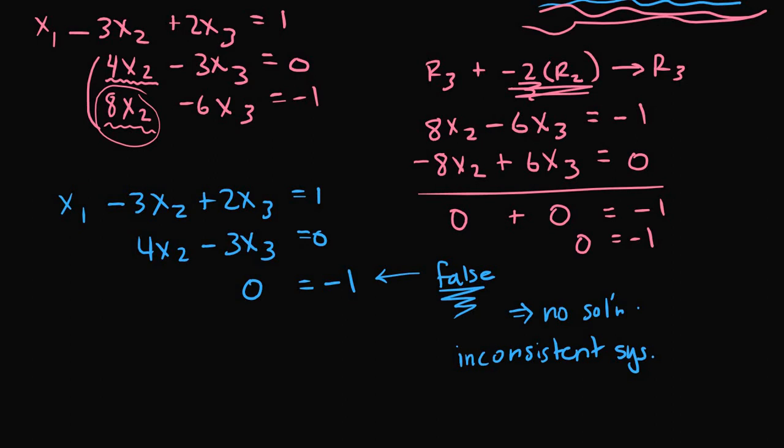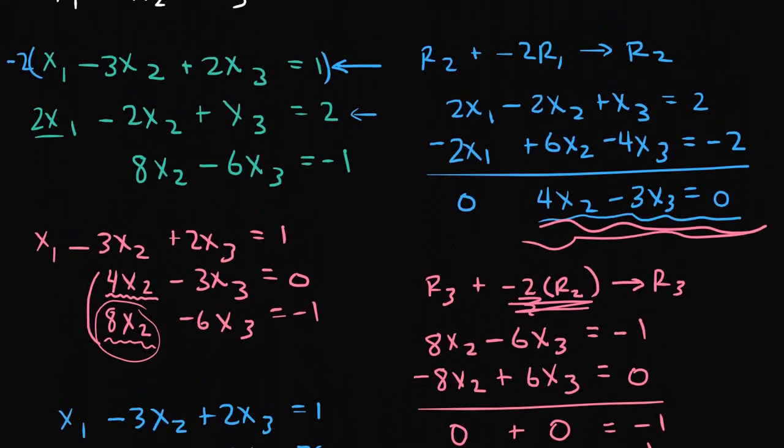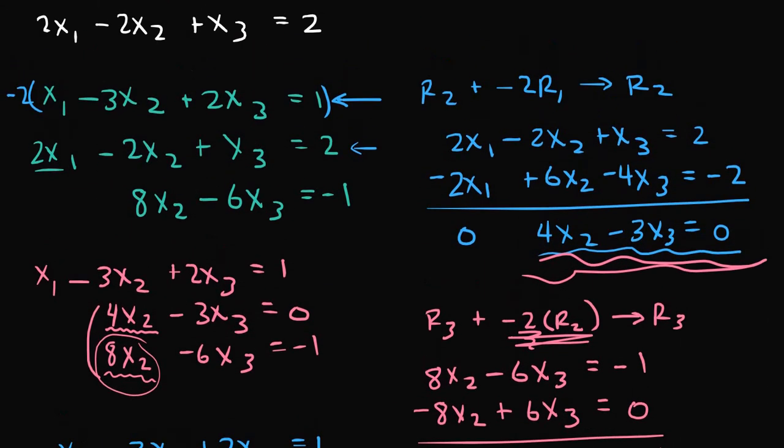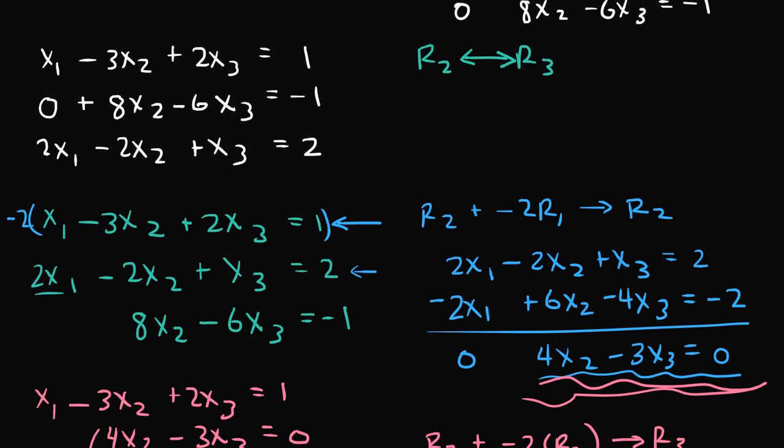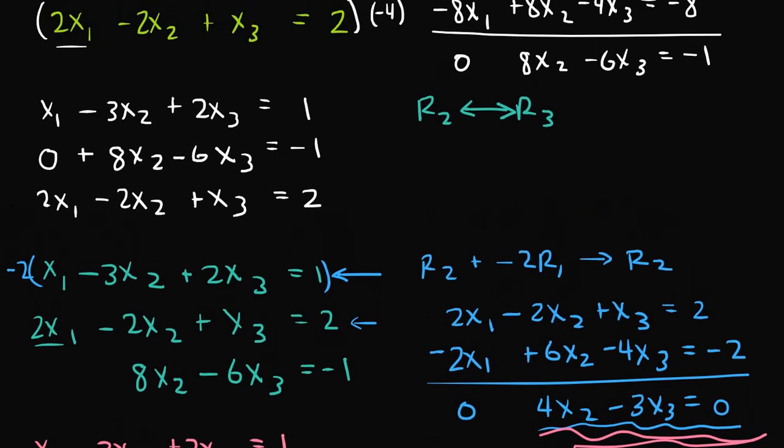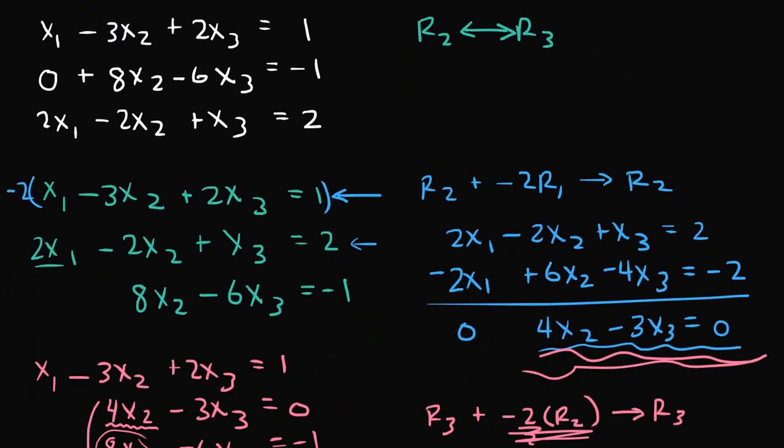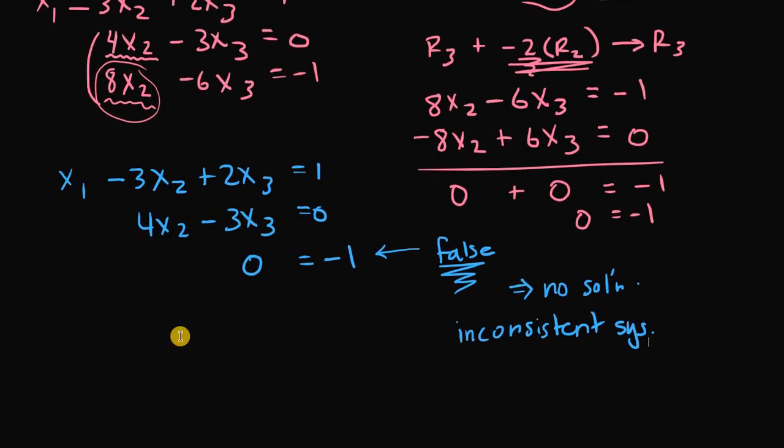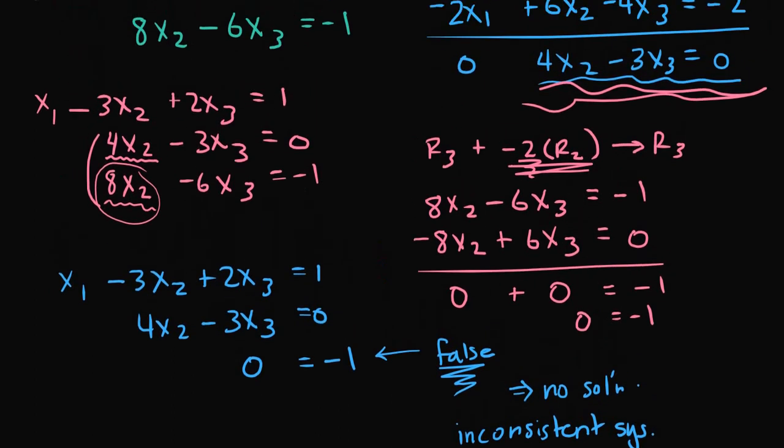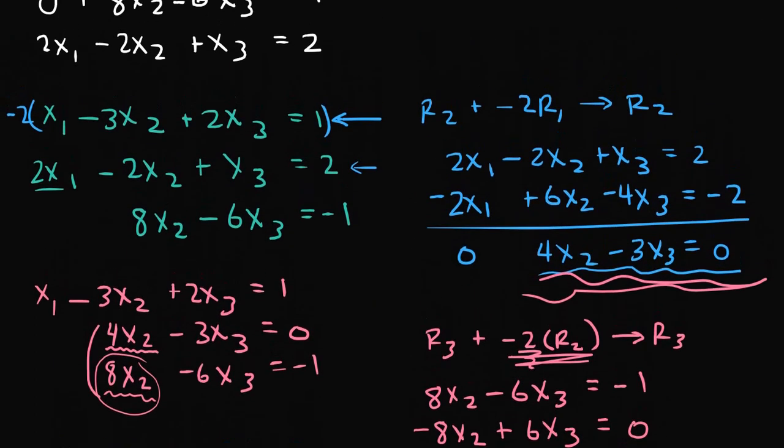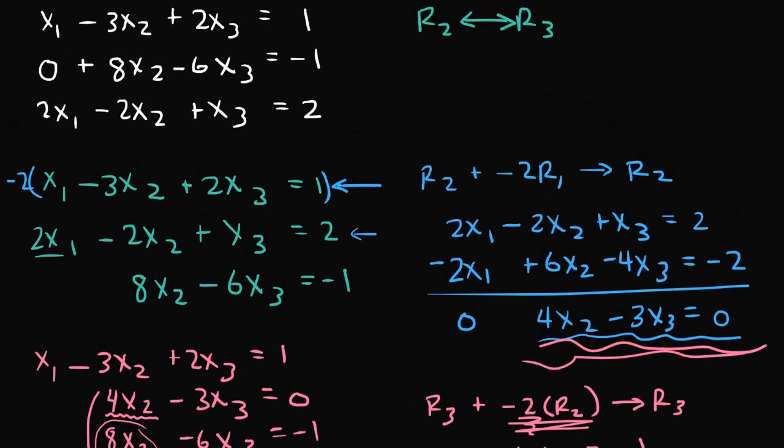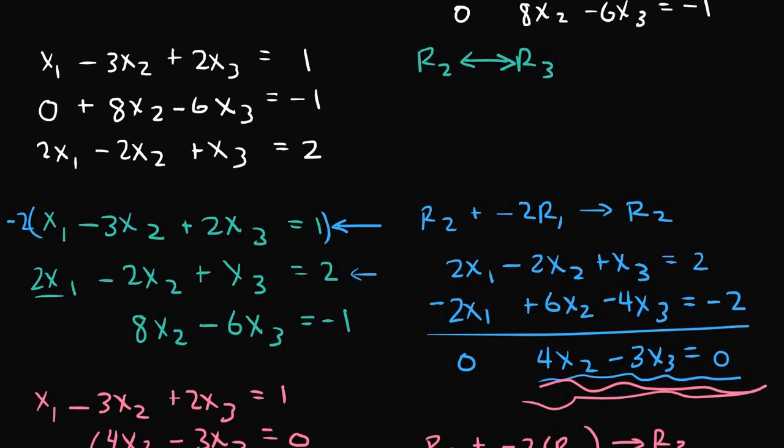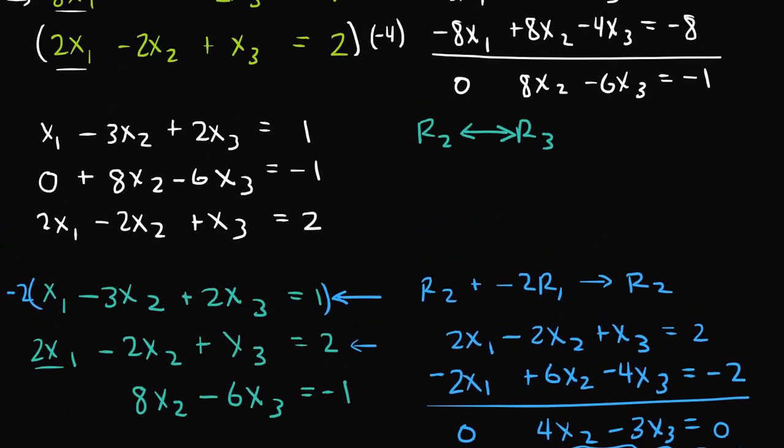More so, since all these equivalent systems that we, or quote-unquote equivalent systems that we came up with, should in fact be equivalent to the original system. And since this has no solution set, this system that we found here, then that means all these other equivalent systems do not have a solution set either. So you would not be able to find an x1, x2, and x3 values that would satisfy any of these systems.